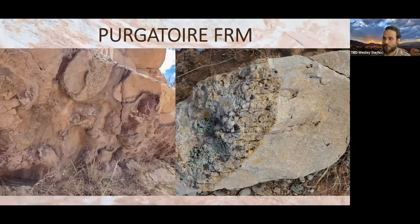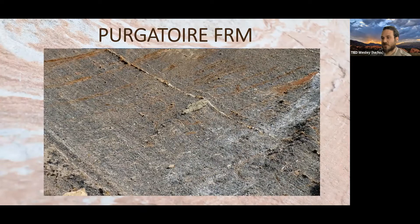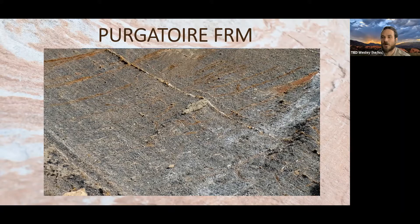The Glencairn unit of the Purgatoire Formation is a shale — pretty dark gray, almost black in places. When that Western Interior Seaway was coming in it left a lot of mud from the shoreline environment. The Glencairn represents the first pulse of the Western Interior Seaway that would later cover all of Colorado and much of North America.